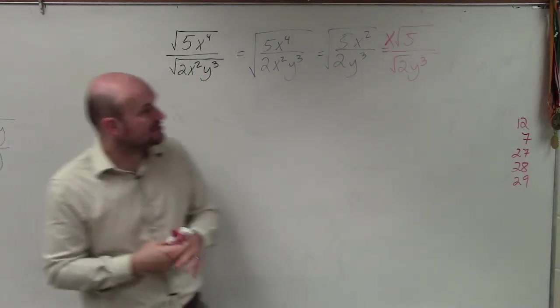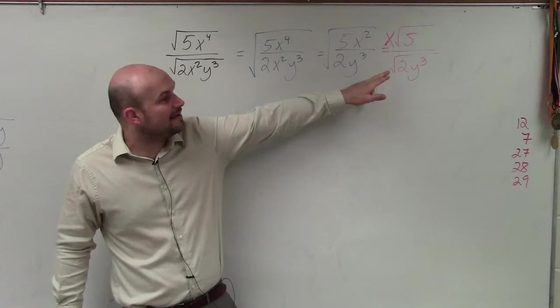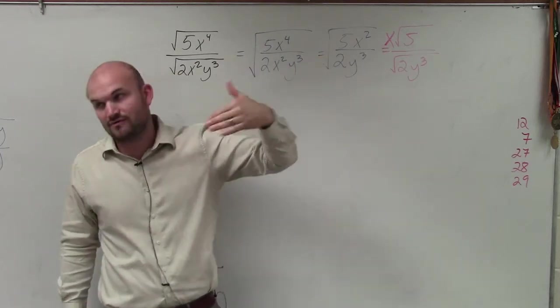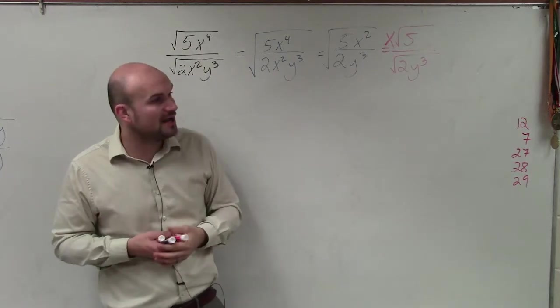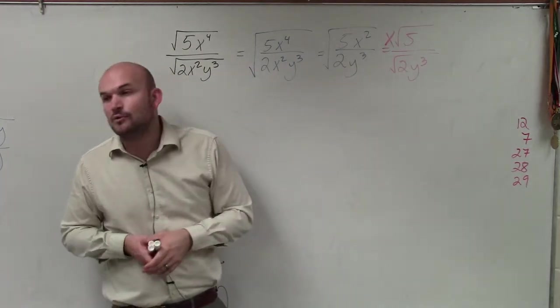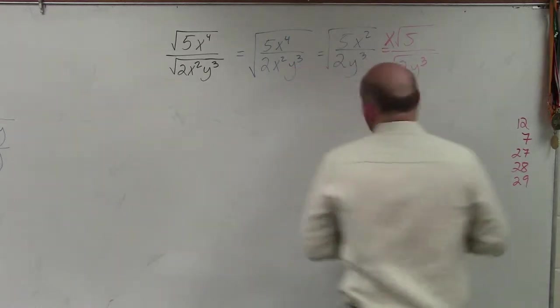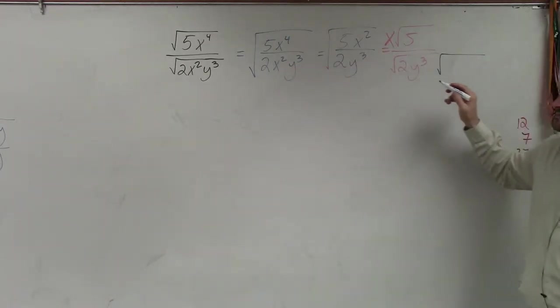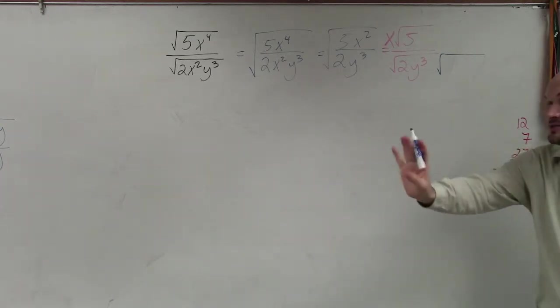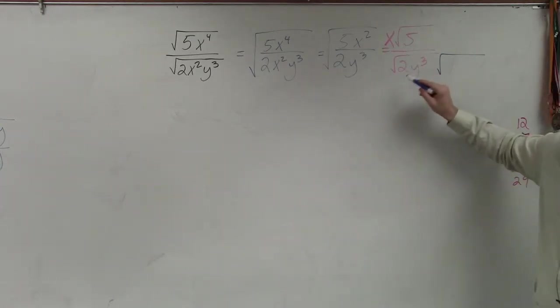Now, the main important thing I want you guys to understand is we cannot divide by a radical. So the one way we didn't go over last class period, because I wanted to save it for today, is what we're going to do is we're going to multiply it by a number that's going to make both of these where we can take the square root of them. So I can't take the square root of 2, right?